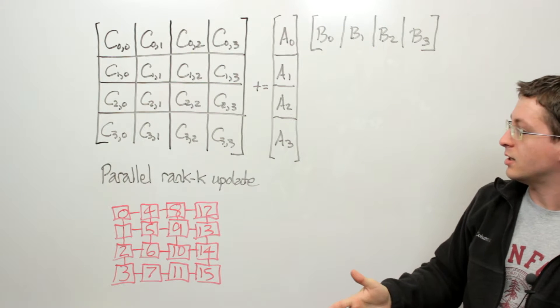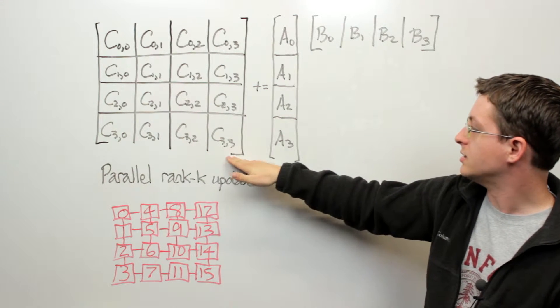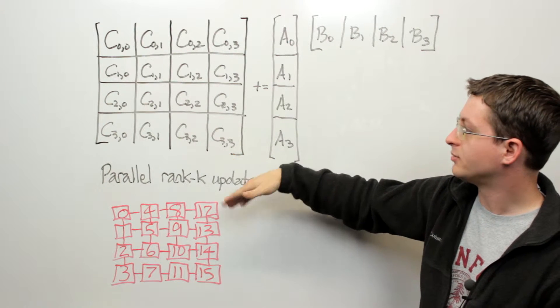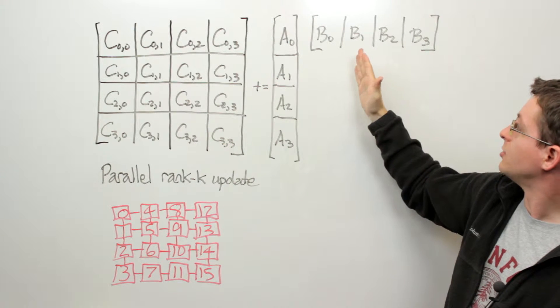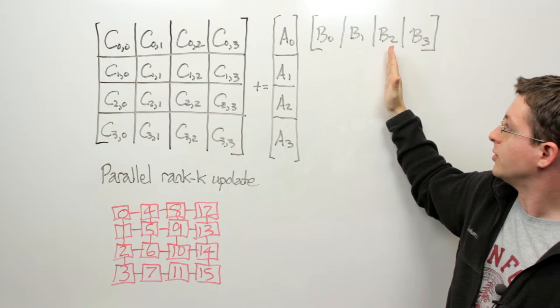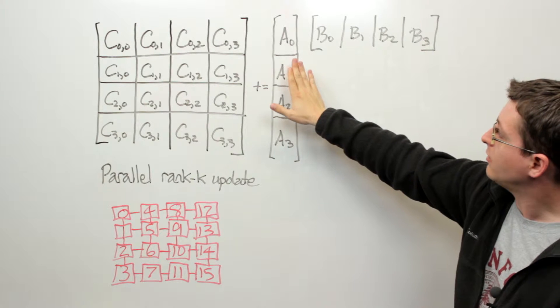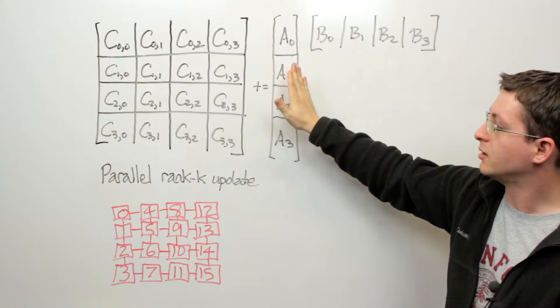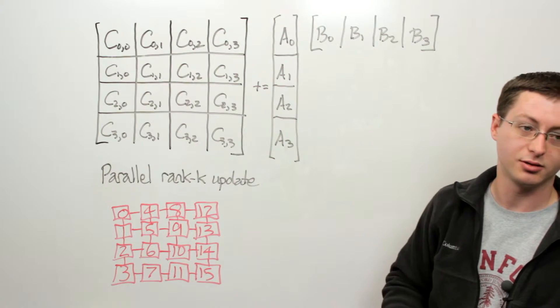So what we notice is that every process in this row needs A3 and every process in the ith row needs A sub i. Likewise every process in the jth column needs BJ. So what this means is that we would like to think of having this matrix A being redundantly distributed only within columns of this two-dimensional process grid.